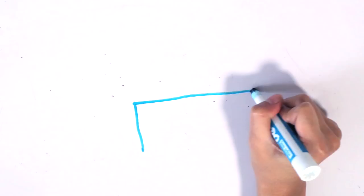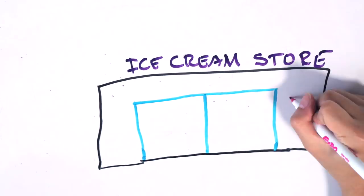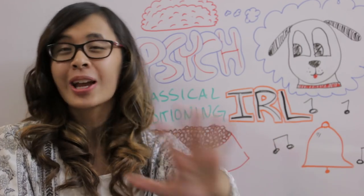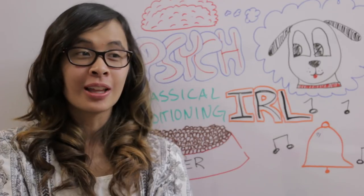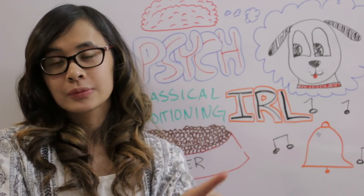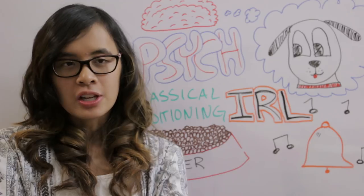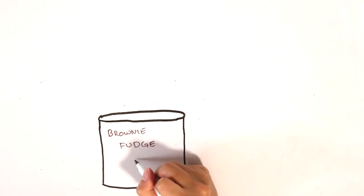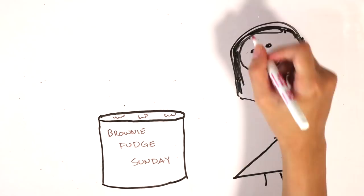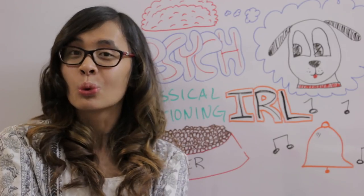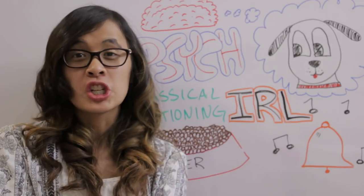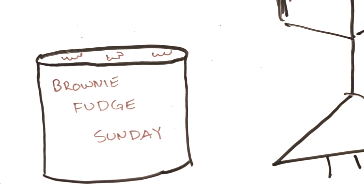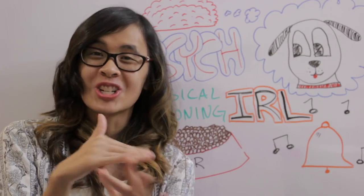Classical conditioning IRL. So we went into an ice cream store one day. My sister bought this chocolate ice cream called brownie fudge sundae. Because there's this rule in this house that whatever's in the fridge is up for grabs, she tried to eat this whole gallon of chocolate ice cream by herself so that she wouldn't have to share.